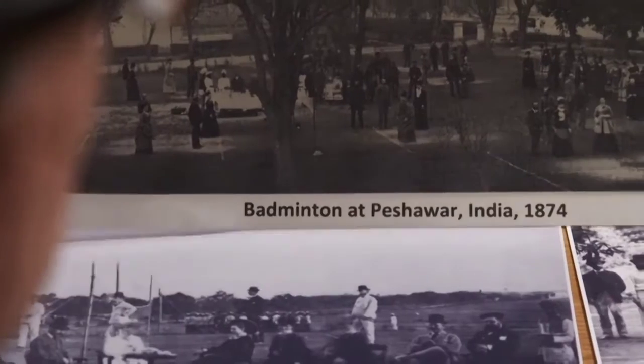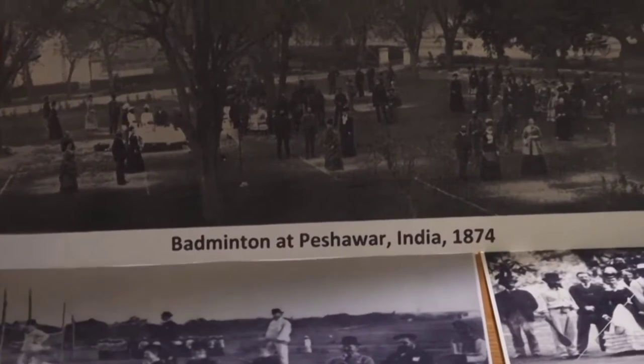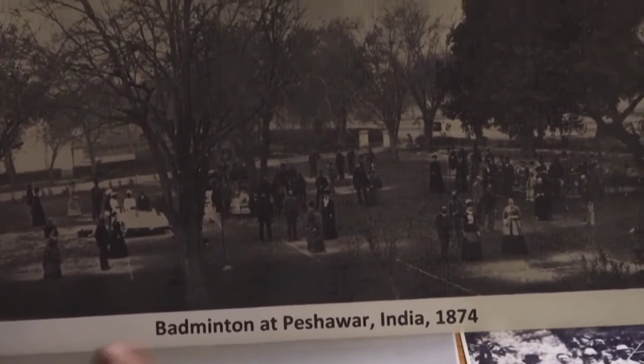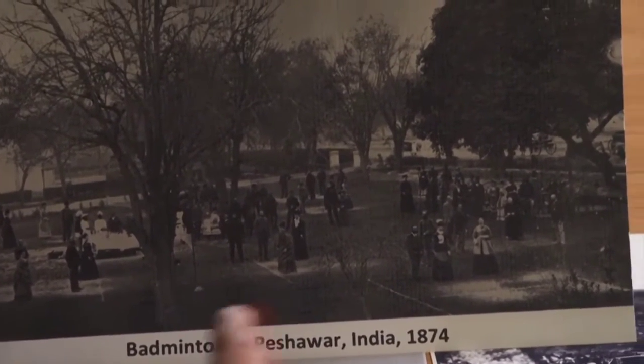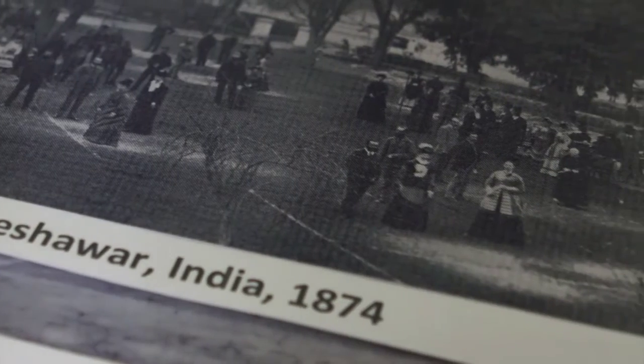This is a photograph of Babington being played in Bashar in India in 1874. You can see that the court is well played because the grass is worn out there.